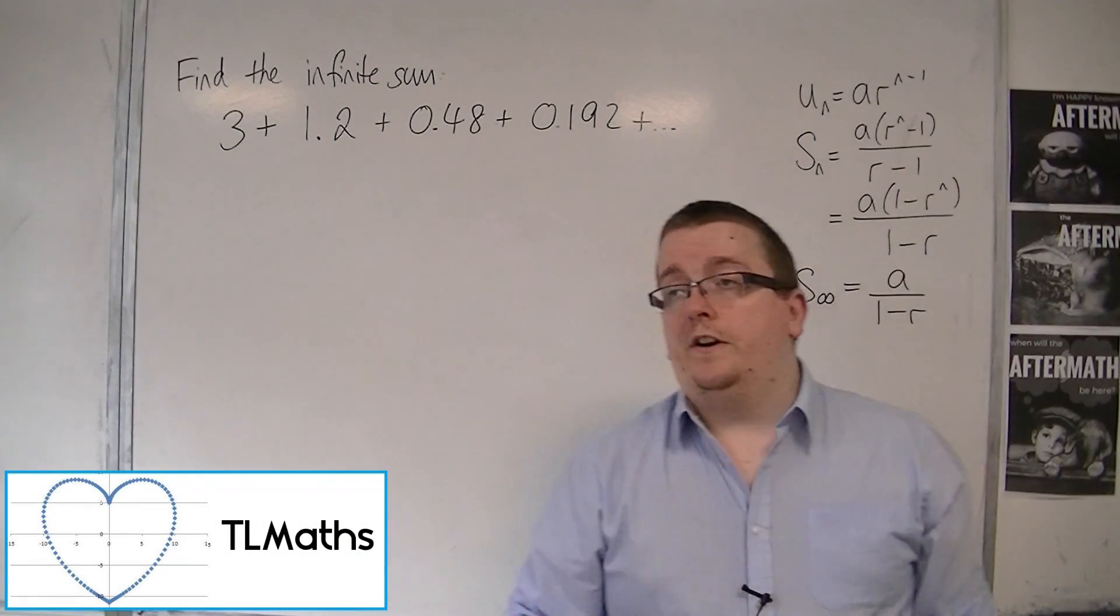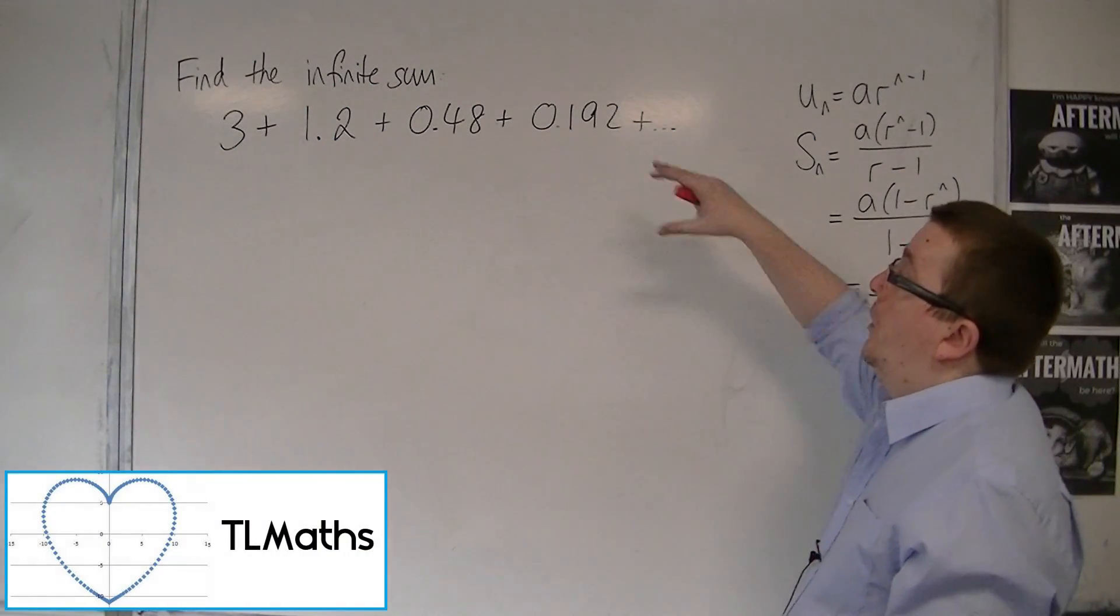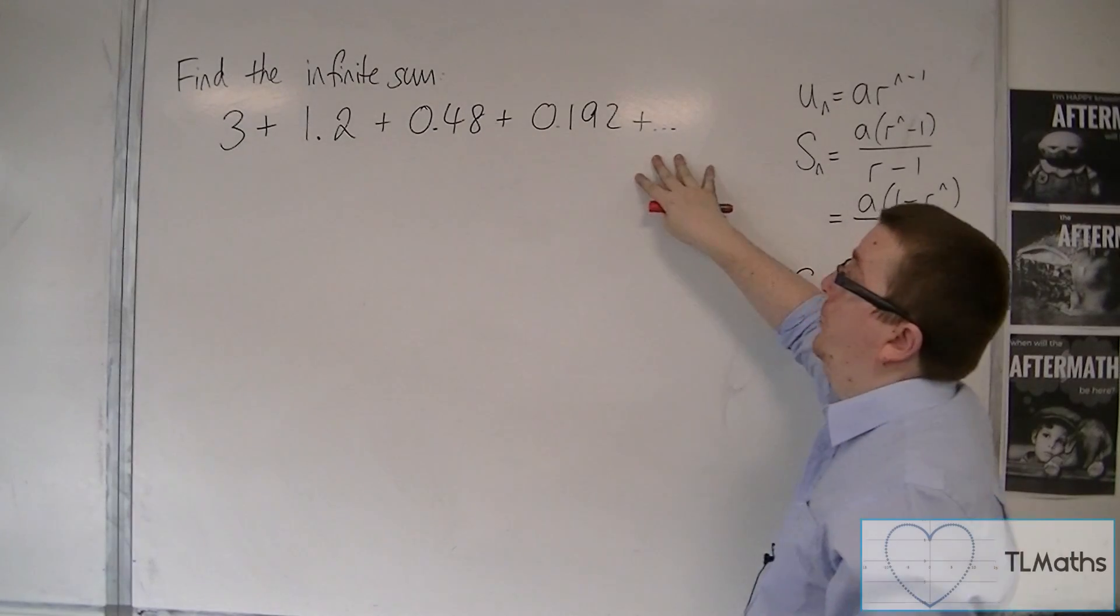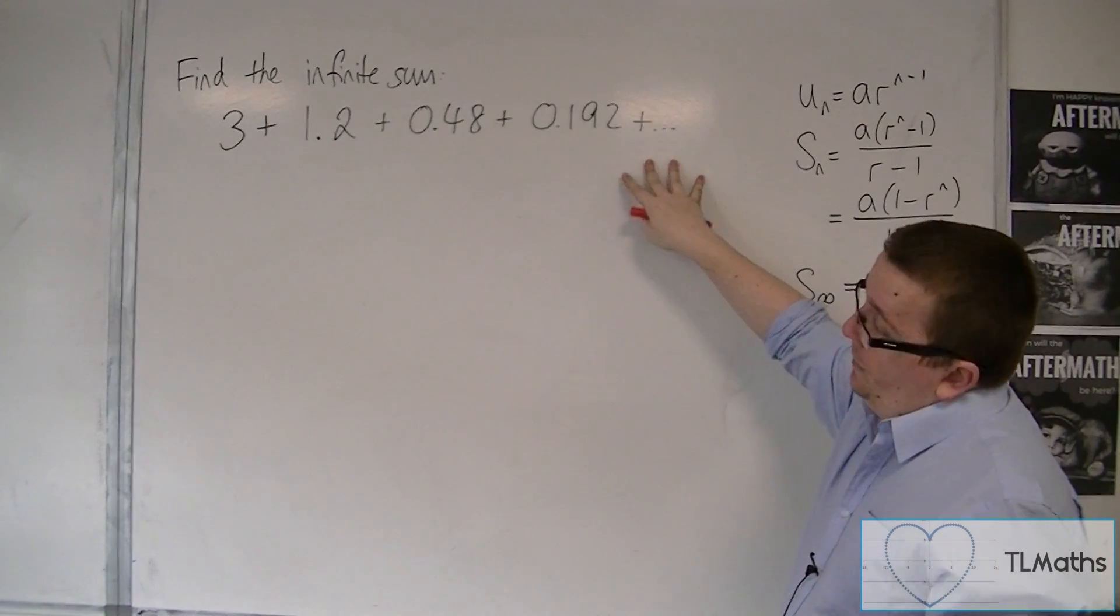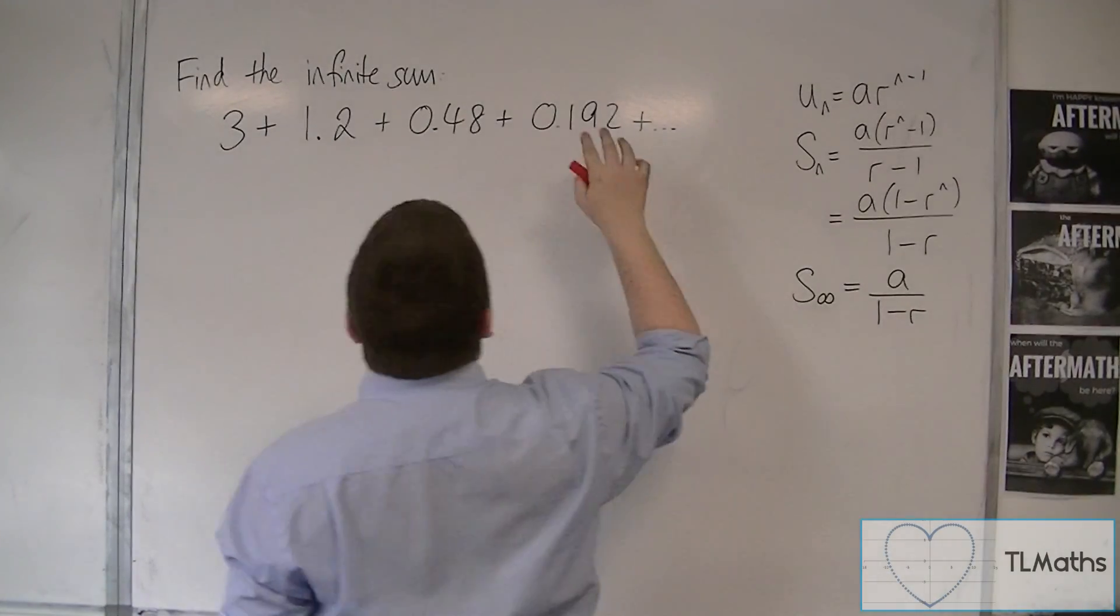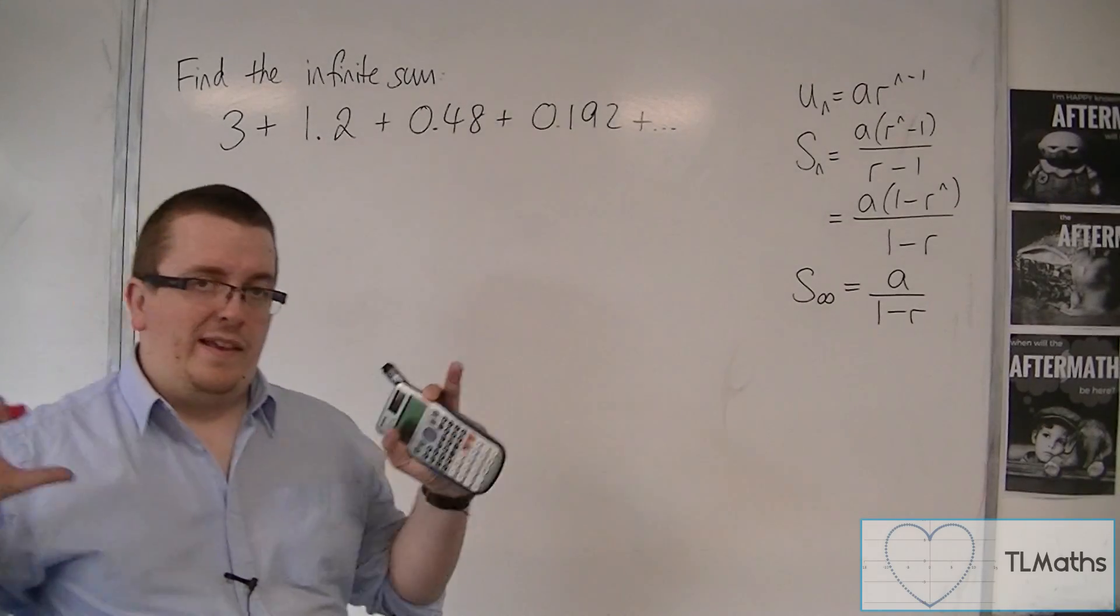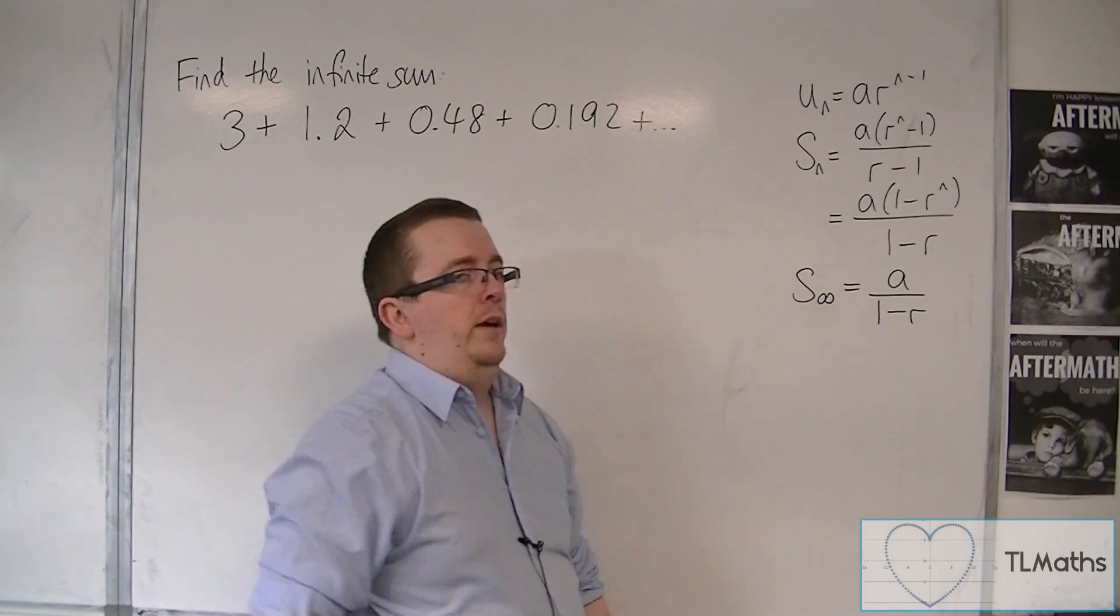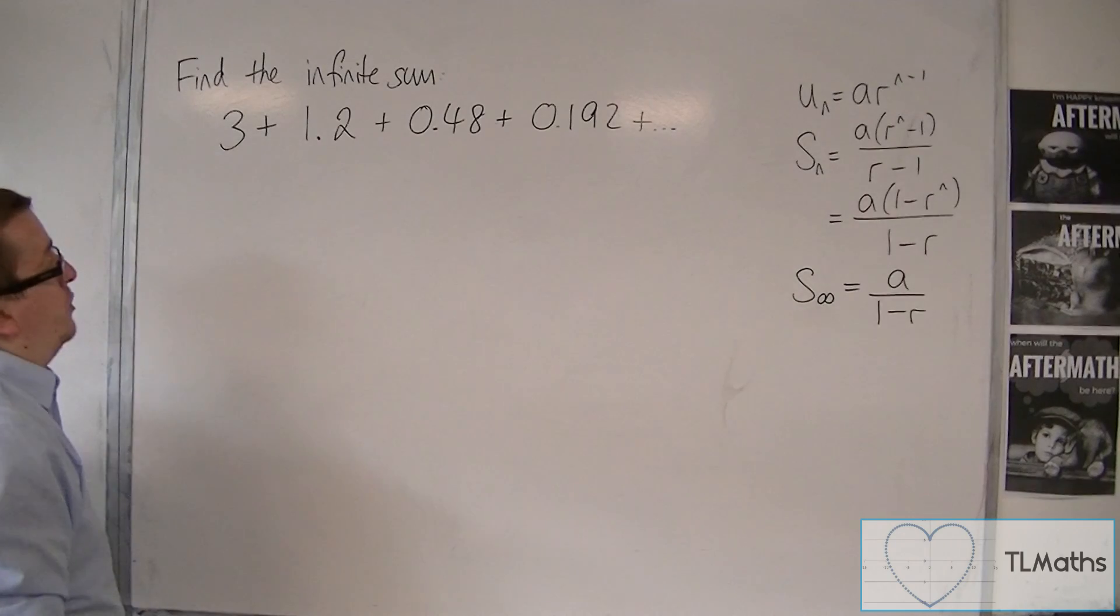So let's say I need to find the infinite sum, so I want to find what these add up to all together. 3 plus 1.2 plus 0.48 plus 0.192 plus, and then an infinite number of terms. This is a geometric series.